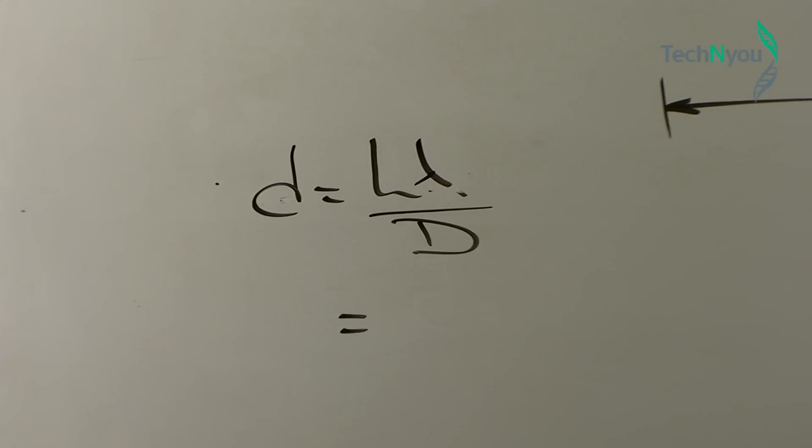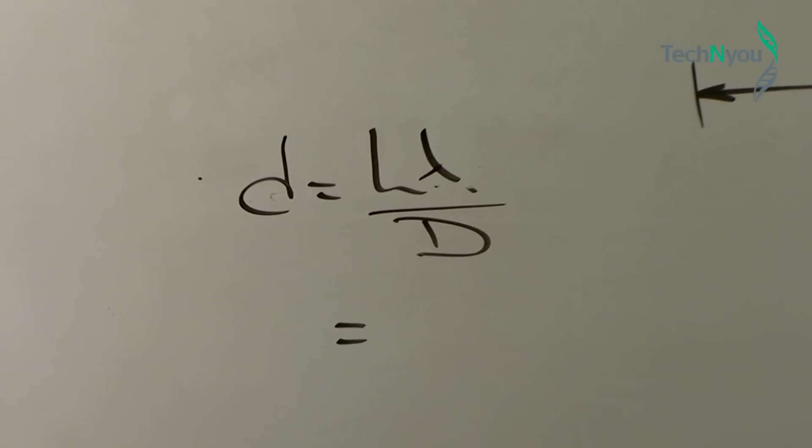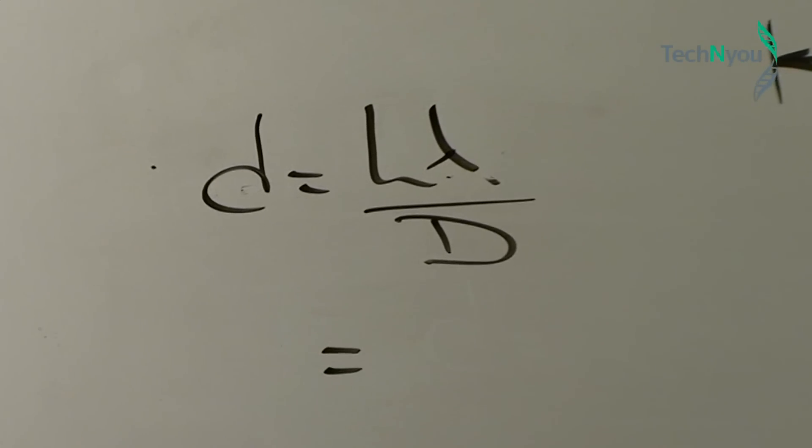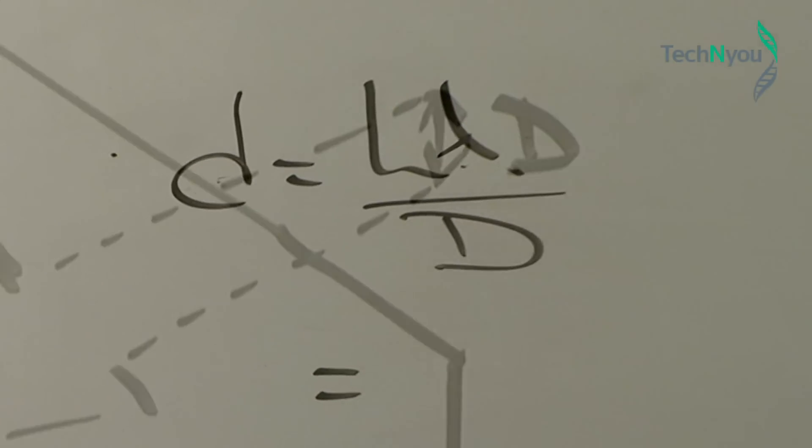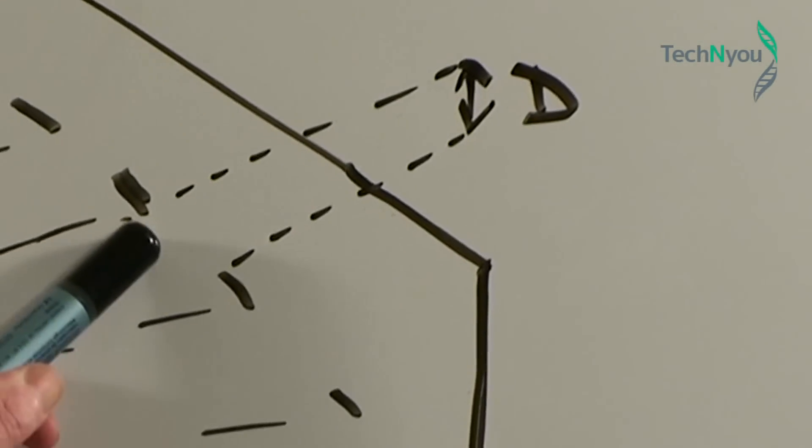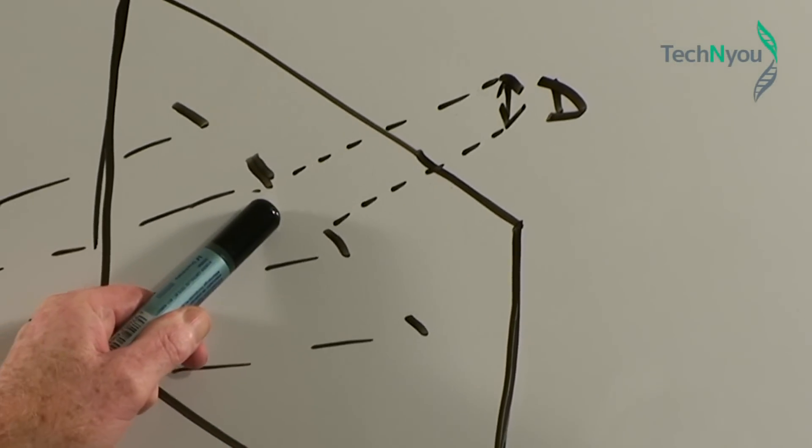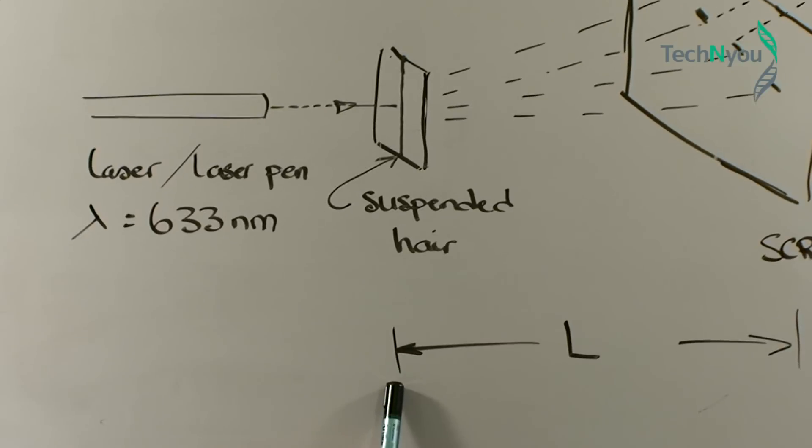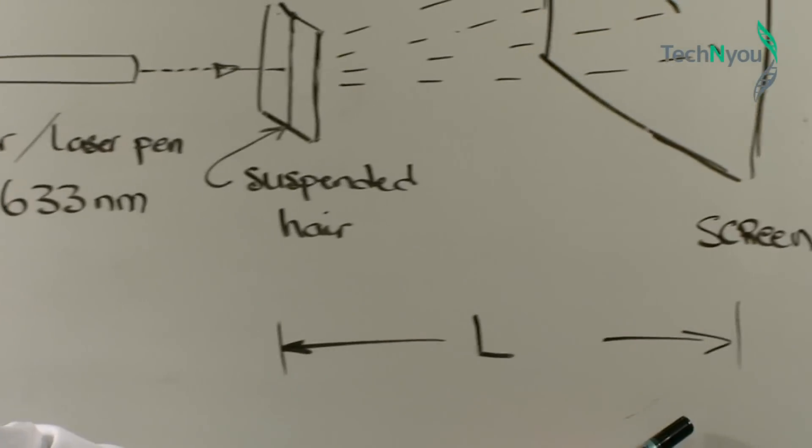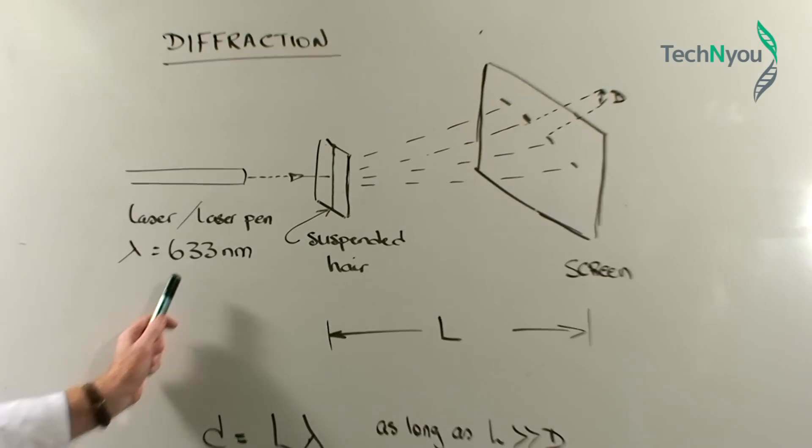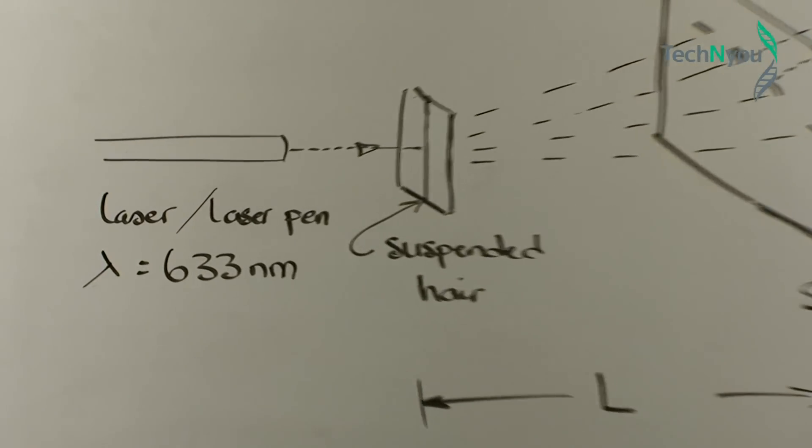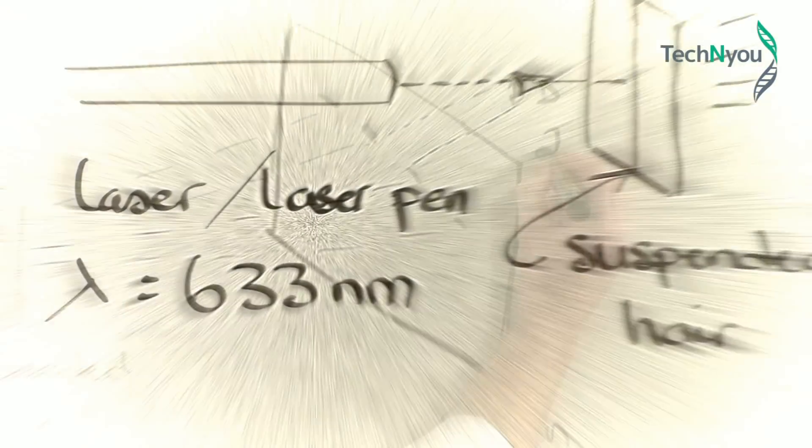Here is the set up. Once we have taken some measurements, the formula allows us to calculate the diameter. D is the distance between two bright parts in the diffraction pattern. L is the distance from the hair to the screen. And lambda is the wavelength of the laser beam. All units must be converted to metres.